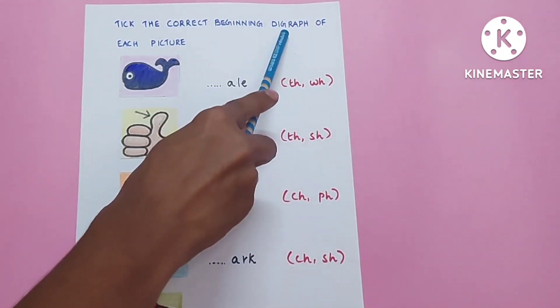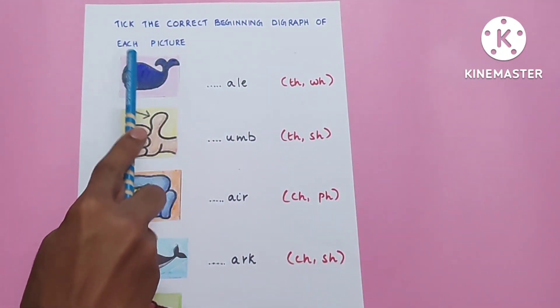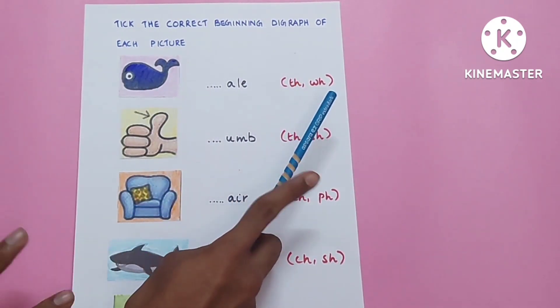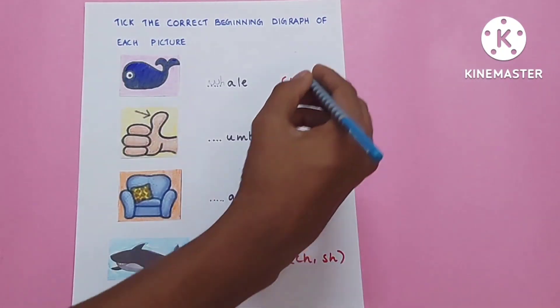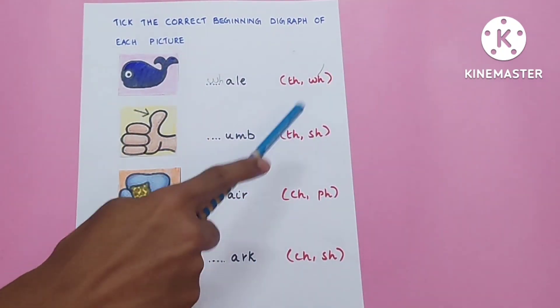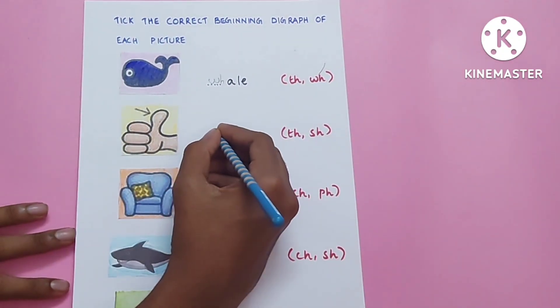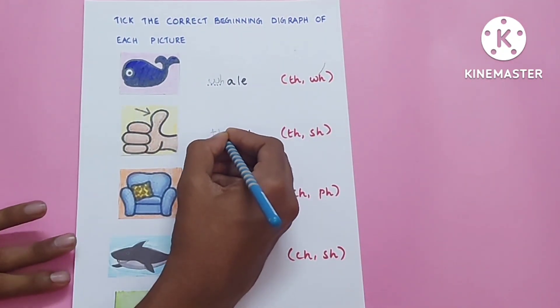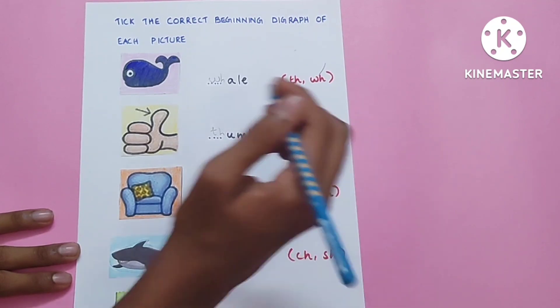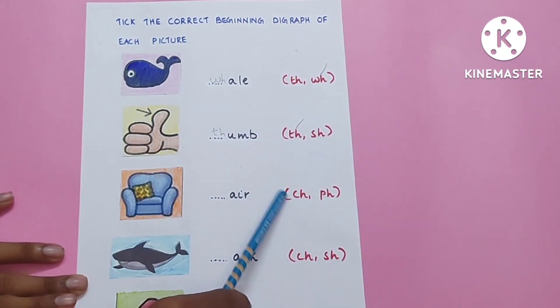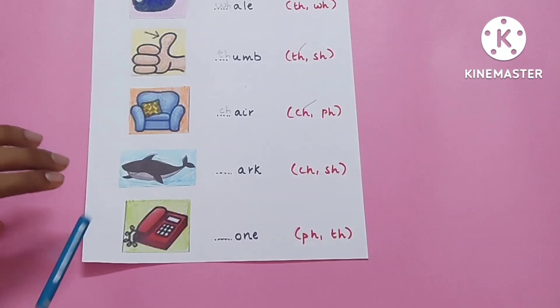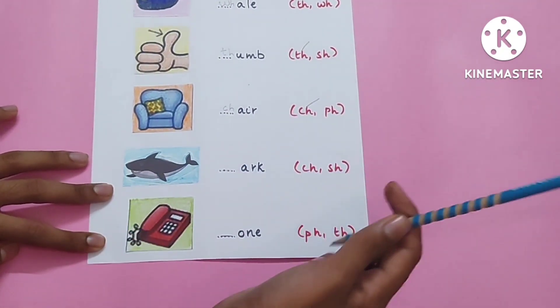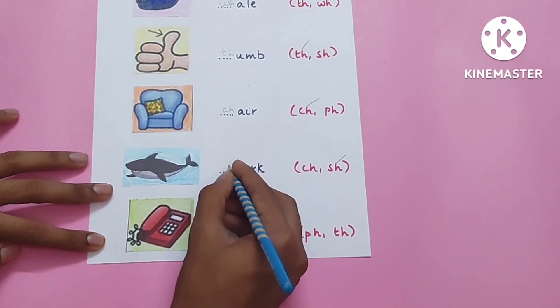Take the correct beginning digraph of each picture. Thumb, T-H. Chip, C-H. Shark, S-H. Phone, P-H.